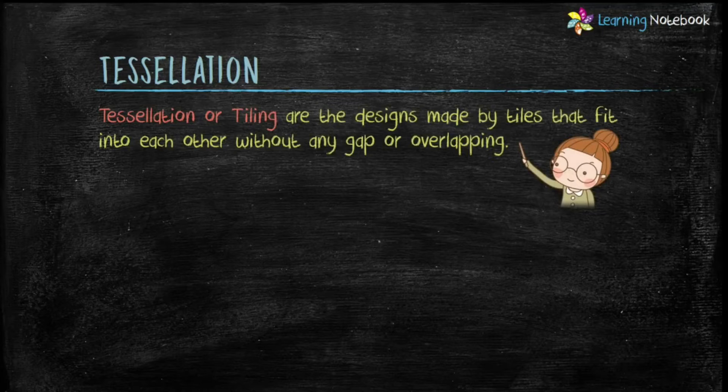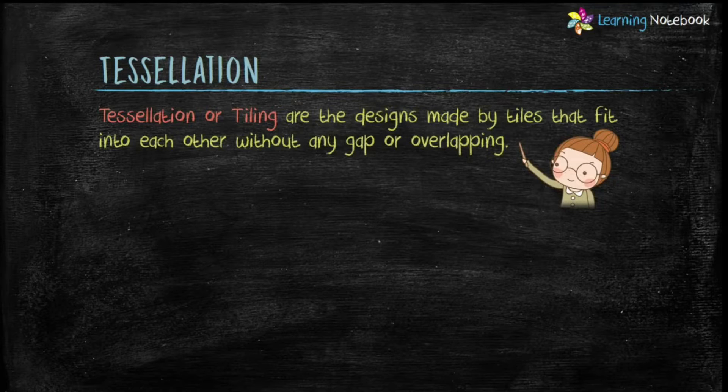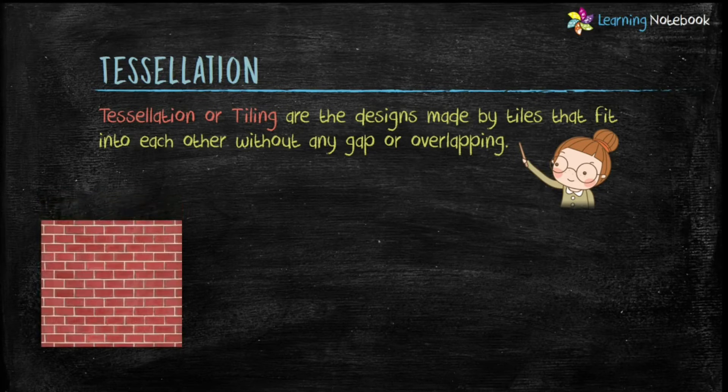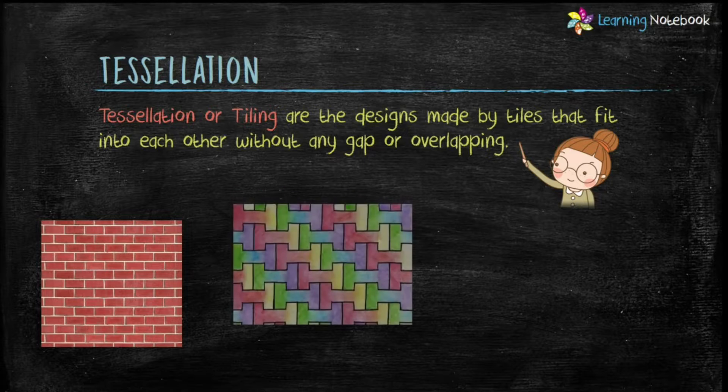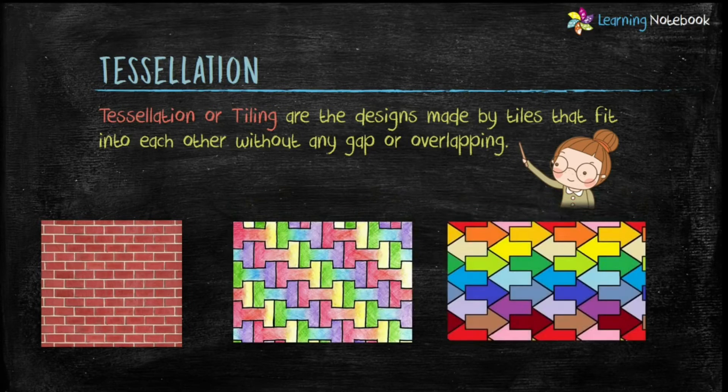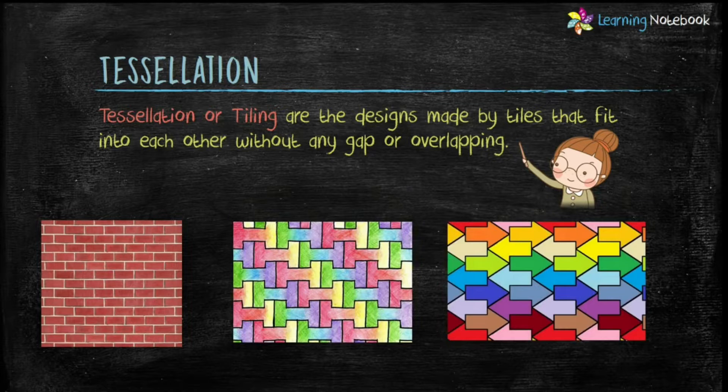Let's first understand what is tessellation. Tessellation or tiling are the designs made by tiles that fit into each other without any gap or overlapping. For example, this brick pattern on the wall or dumbbell shape patterns like this and arrow shape patterns are all examples of tessellation.